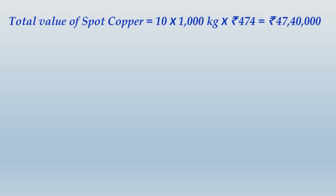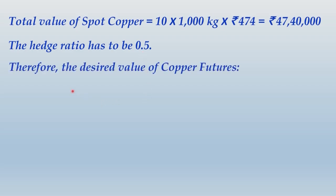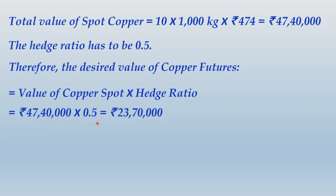Next, we determine the total value of copper held in spot. The quantity held is 10 metric tons; each metric ton equals 1000 kg, so total is 10,000 kg multiplied by the per kg price of rupees 474, giving a total spot value of rupees 47,40,000. Since the hedge ratio is 0.5, the desired value of copper futures = rupees 47,40,000 × 0.5 = rupees 23,70,000.